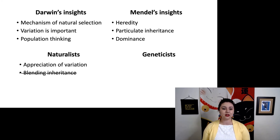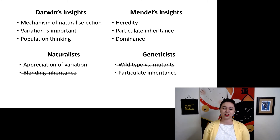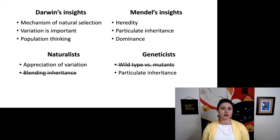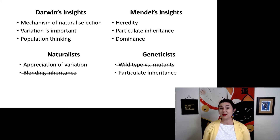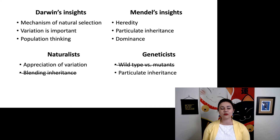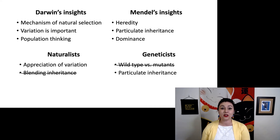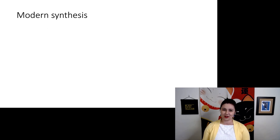Naturalists were right in their appreciation of variation, but wrong about blending inheritance. Geneticists were wrong about wild type and mutants, but correct about particulate inheritance. This is part of the reason why it was so difficult to reconcile these different viewpoints — both camps were right about something but had incorrect beliefs about the other. It took some time to recognize how these theories could be combined, and that came about in the modern synthesis.